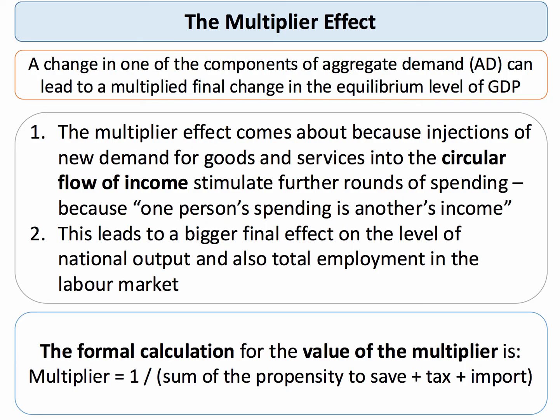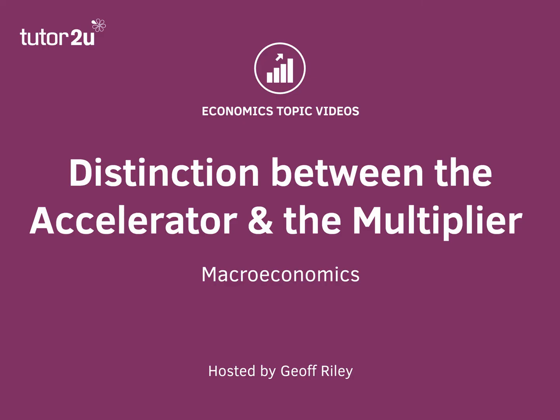A formal calculation for the multiplier, which we cover in a separate topic video, is that the multiplier is one divided by the sum of the leakages from the circular flow: the marginal propensity to tax, the marginal rate of import demand, and the marginal propensity to save. That's the difference between the accelerator effect and the multiplier effect.